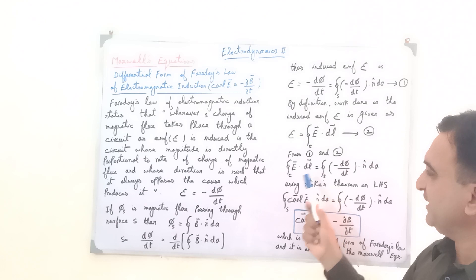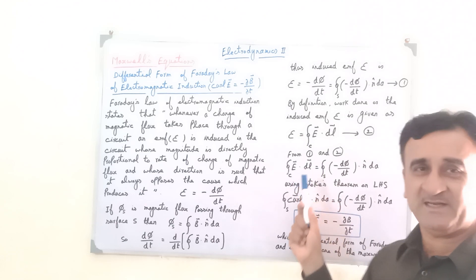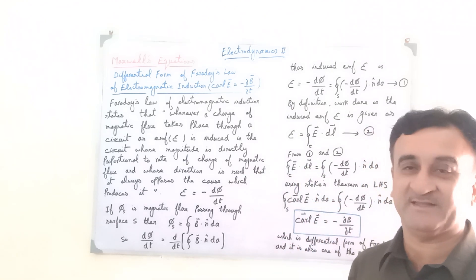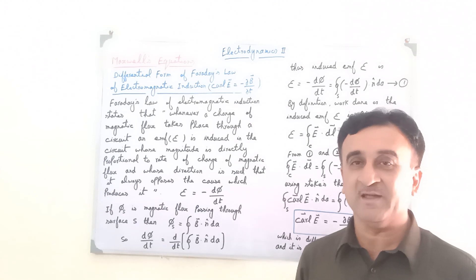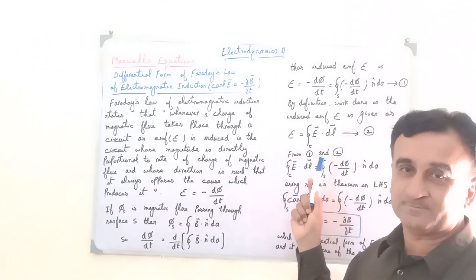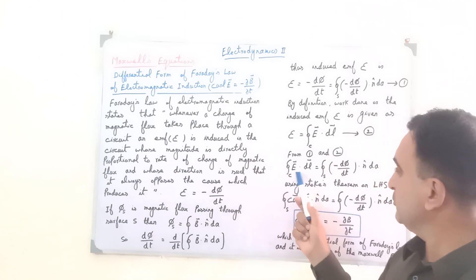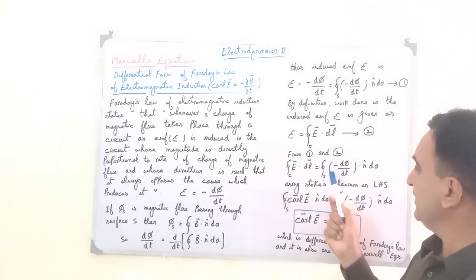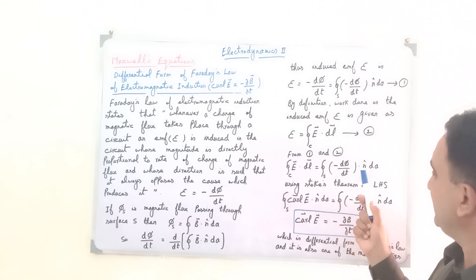Now we can write that E dot dL, where E is the electric field intensity at any length element dL of the wire carrying current, equals the integral minus d phi by dt dot n unit vector dA.